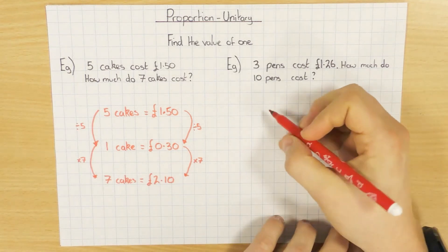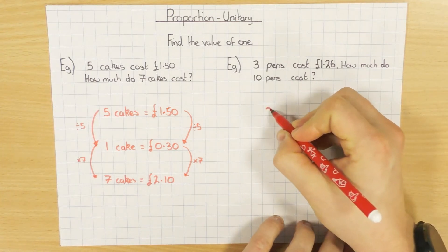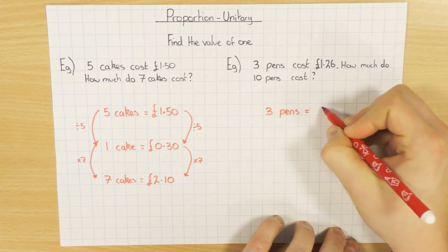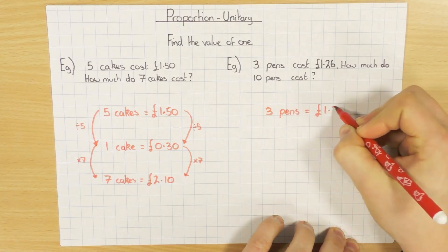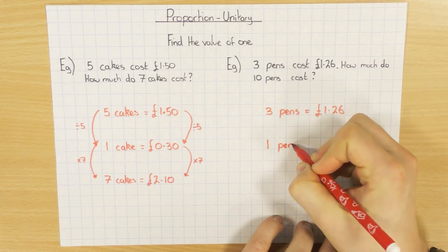Slightly trickier one here, but not too bad. I've got 3 pens cost £1.26. So we set it up in exactly the same way. 3 pens, £1.26. Exactly the same concept. Find out how much one pen is worth.